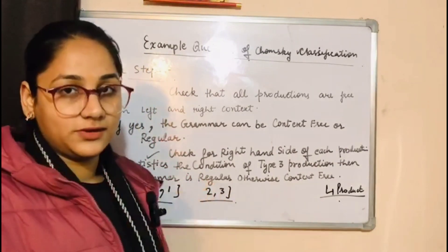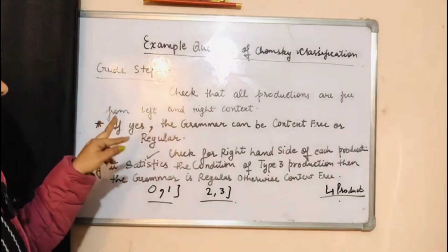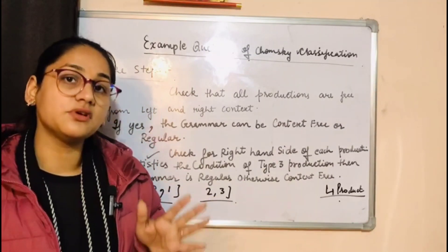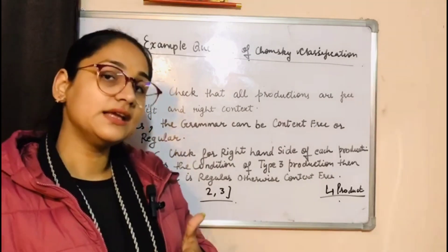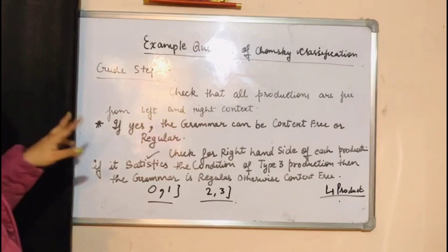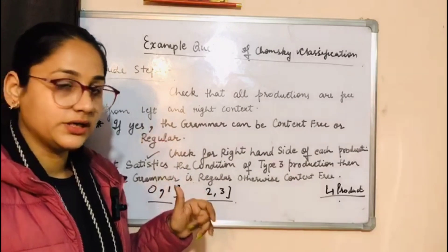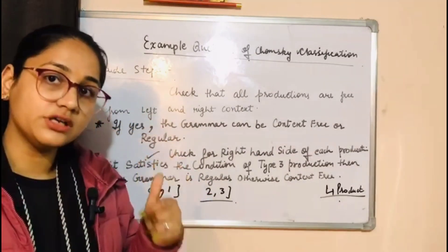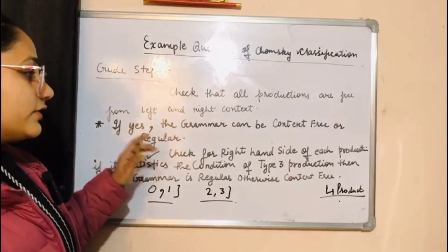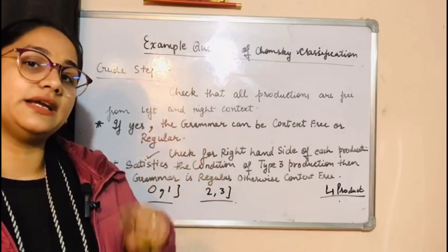The first step is to check that all productions are free from left and right context. We have to check that the productions are free from left and right context or not. If it is free from context, then the grammar can be context-free or regular. After that, we need to check the right-hand side.